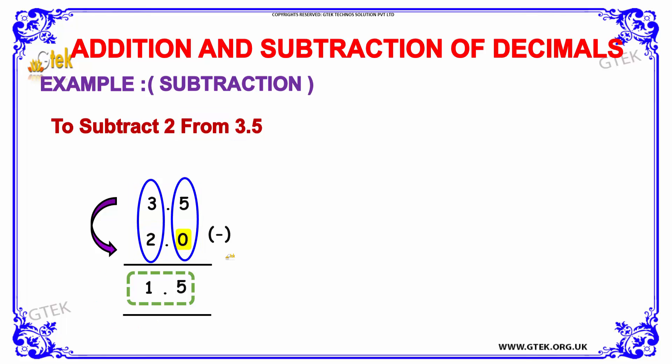When subtracting 5 minus 0, it's 5. Subtracting 3 from 2 — that is 3 minus 2 — it's 1. So the answer is 1.5.